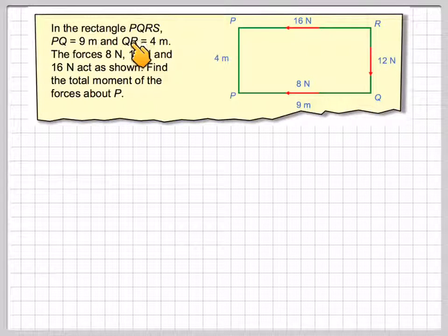In a rectangle PQRS, PQ is 9 meters, QR is 4 meters. This is 4, therefore this is also 4. The forces 8 newtons, 12 newtons, and 16 newtons act as shown. There's an 8 newton force acts here, 12 newton force acts here, and the 16 newton force acts here. Find the total moment of the forces about P.